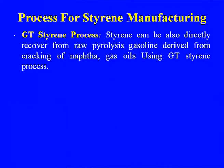Another process technology for styrene manufacture is the GT Styrene process. Styrene can be directly recovered from raw pyrolysis gasoline derived from naphtha/gas oil cracking. In the C8 aromatics stream from aromatics production, ethyl benzene is present alongside para xylene and ortho xylene; this ethyl benzene can be separated and used directly for styrene production. Ethylene from FCC gases can also be utilized.